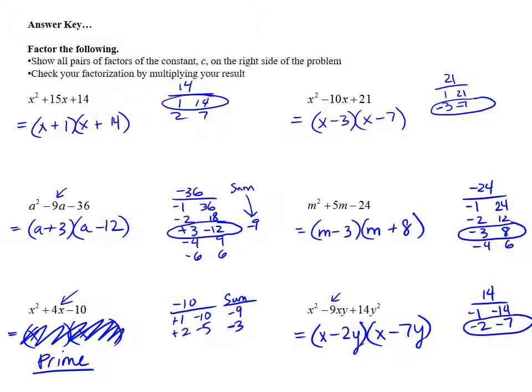So that looks like our answers. To check this, we're just going to go back up through these and FOIL them out. So I'm going to use a different color. To check this, I'm going to have x times x or x squared plus 14x plus 1x for the inside plus 1 times 14 is 14. Adding up those middle terms, I get x squared plus 15x plus 14. That is where I started. So that checks.